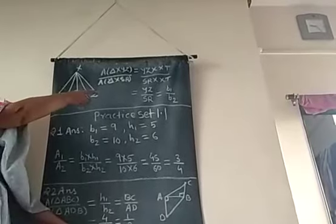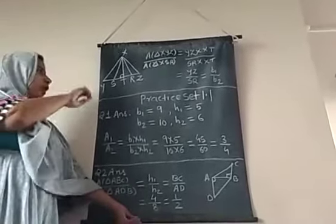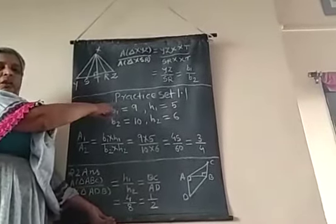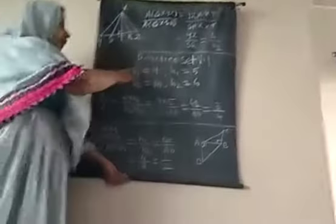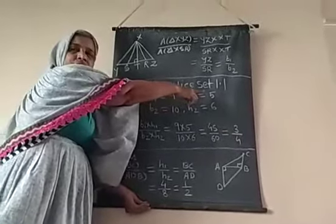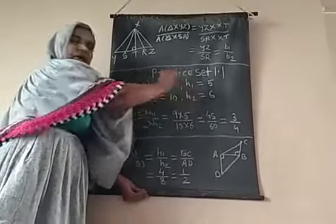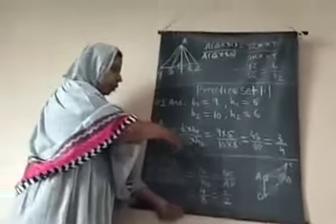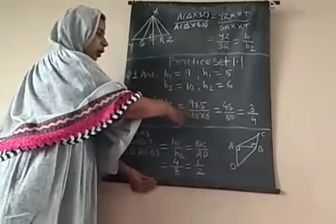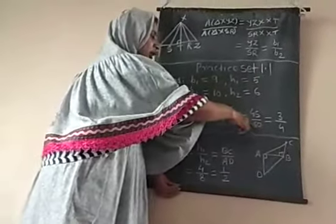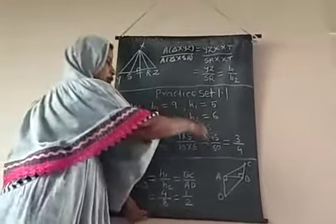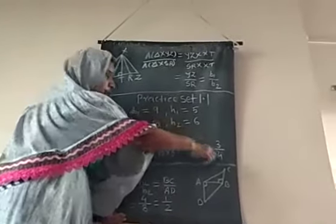When the triangles have equal base, only height ratios are used. When the triangles have equal height, only base ratios are used. These three properties are used to solve examples. Practice set 1.1, first question: base of first triangle is 9 units, height is 5 units; second triangle base is 10 units, height is 6 units. So, A1 upon A2 equals B1 into H1 upon B2 into H2, which equals 9 multiplied by 5 upon 10 multiplied by 6, giving 45 upon 60. The reduced form is 3 upon 4, since 15 is the common factor.